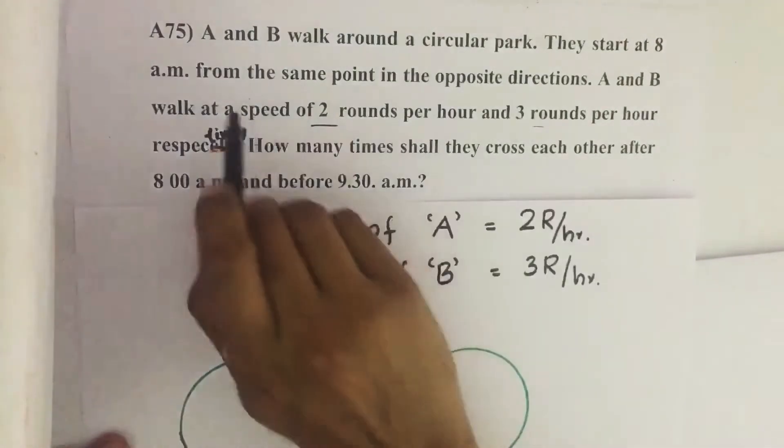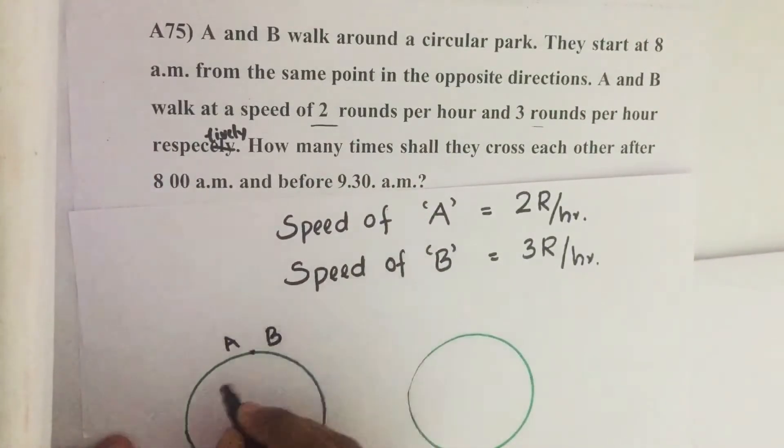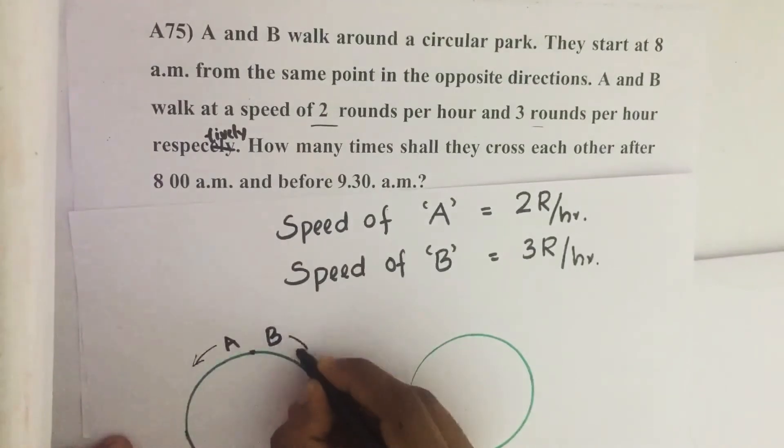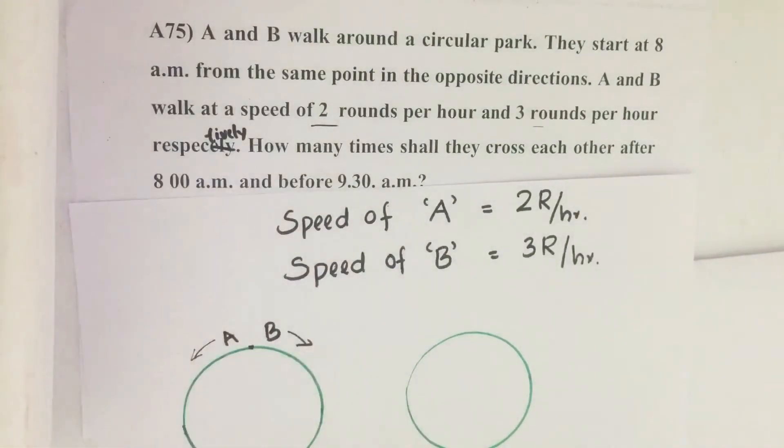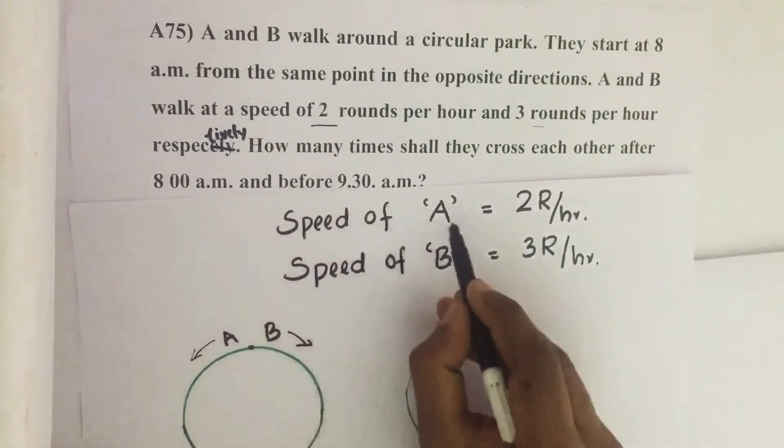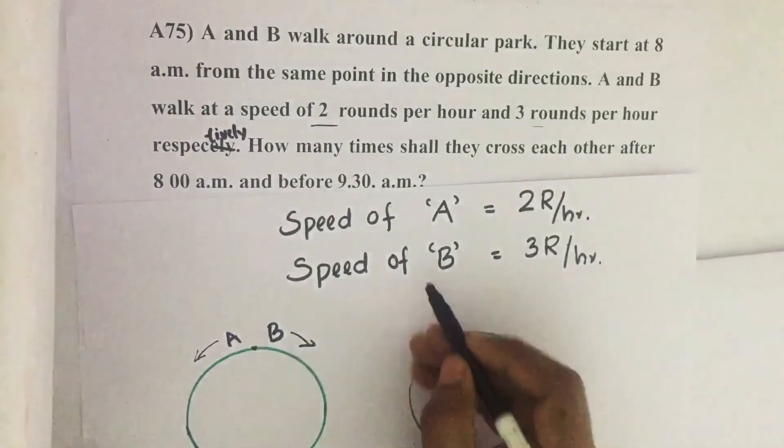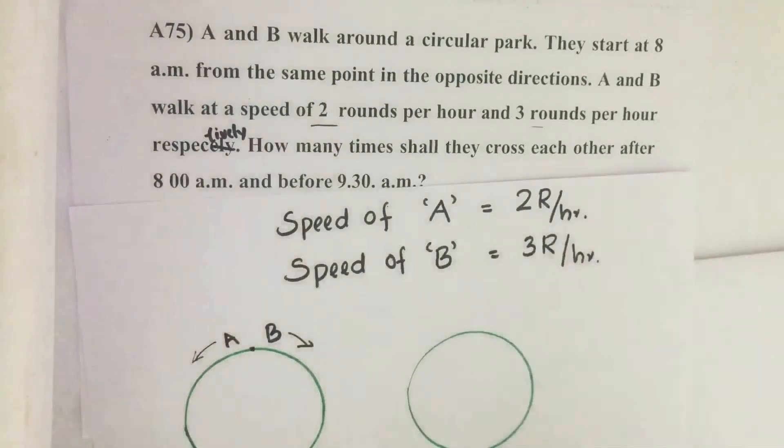So there are two people A and B. They are walking around a circular park starting from same point in opposite directions. Then it is given that speed of A equals 2 rounds per hour. Similarly speed of B equals 3 rounds per hour.